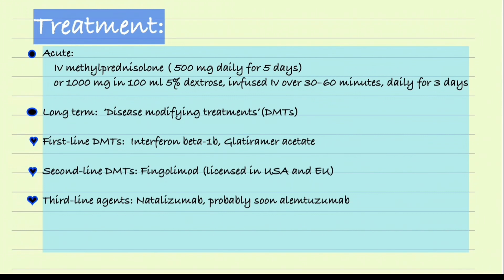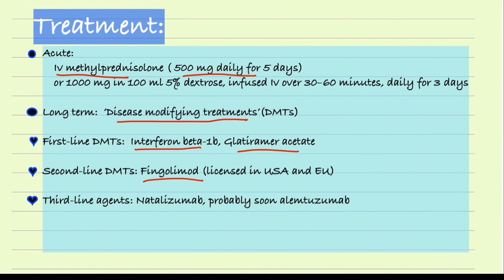For treatment of multiple sclerosis, we use IV steroids — mainly 500mg daily for 5 days — for acute attacks. For long-term management, we use disease-modifying treatments. First-line options are interferon beta-1b and glatiramer acetate. Second-line is fingolimod, licensed in the USA and Europe. Third-line is natalizumab.